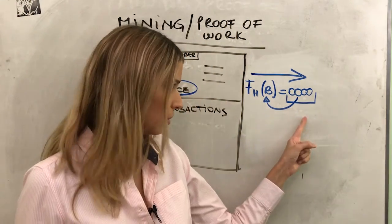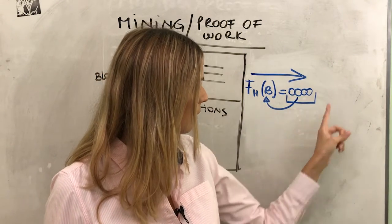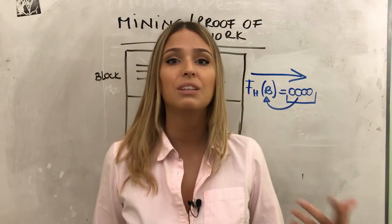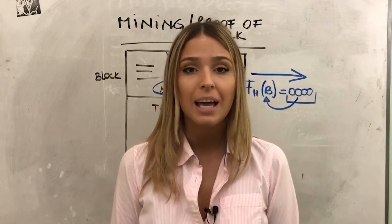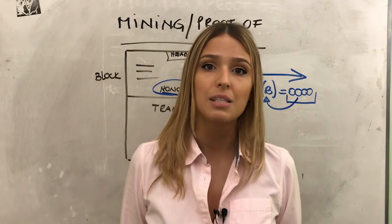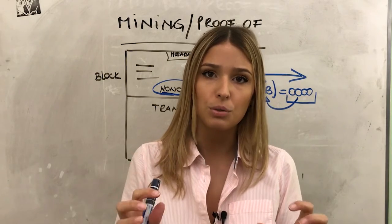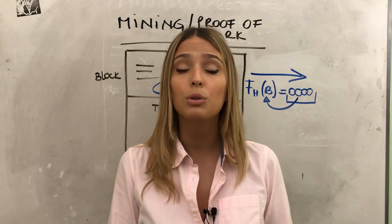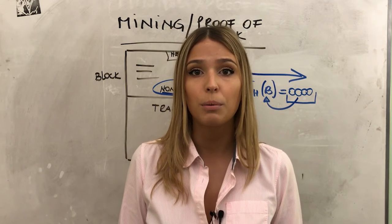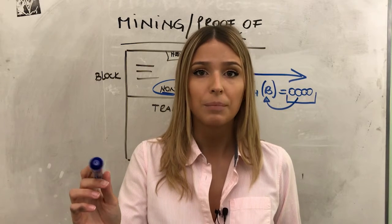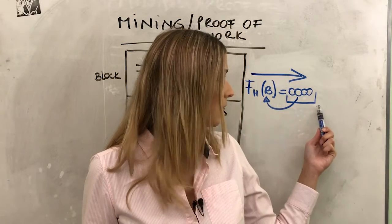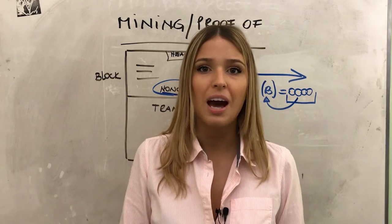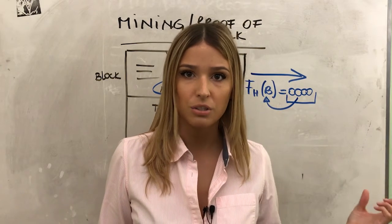The more zeros required at the beginning of a hash, the more difficult it is to mine a block. A block is always targeted to be produced every ten minutes. If more miners join the ecosystem, they can guess the nonce faster — because it's based on probability — so the difficulty must be increased. Every two weeks, the nodes constantly adjust the difficulty of this process.